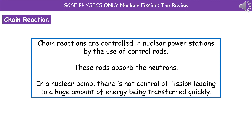We control chain reactions in our nuclear power stations through the use of control rods. These rods just absorb the extra neutrons to prevent that chain reaction from going further. The key distinction between our nuclear power station and a nuclear bomb is that in the nuclear bomb we don't have control rods, so there's no control of fission, which leads to a huge amount of energy being transferred very quickly.